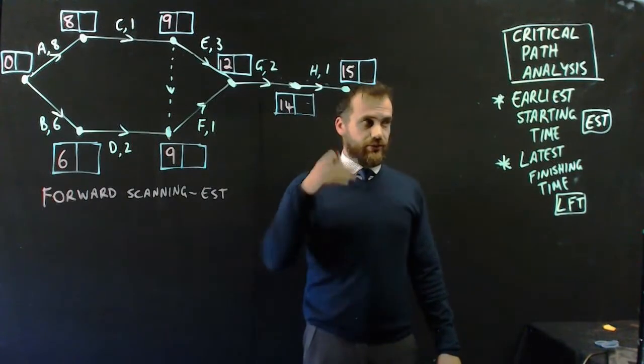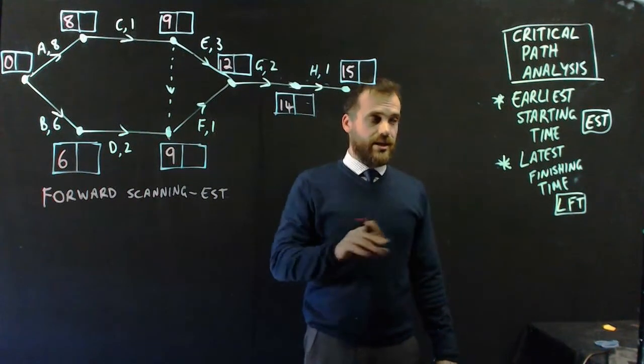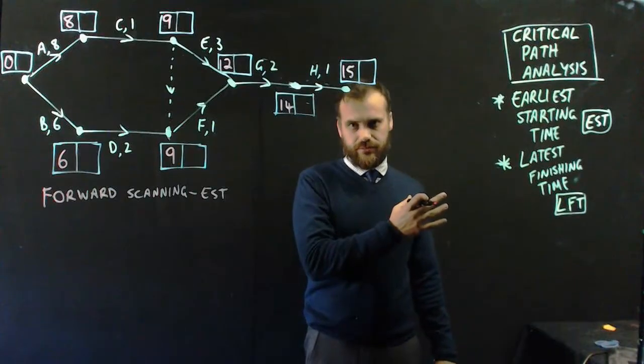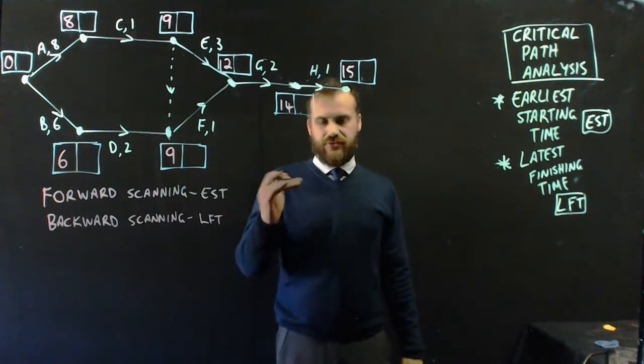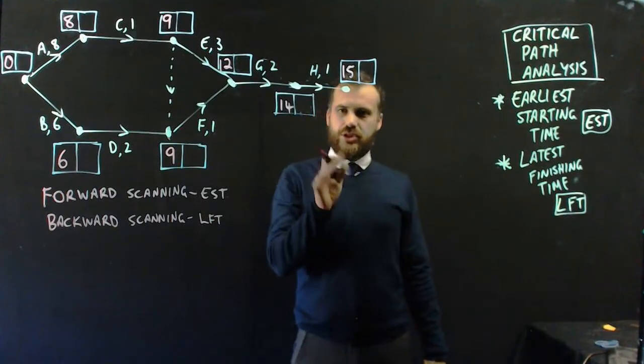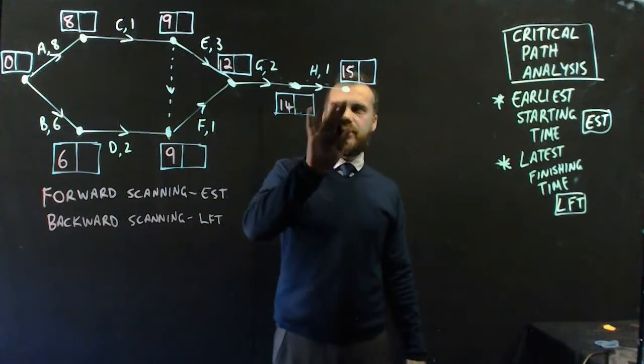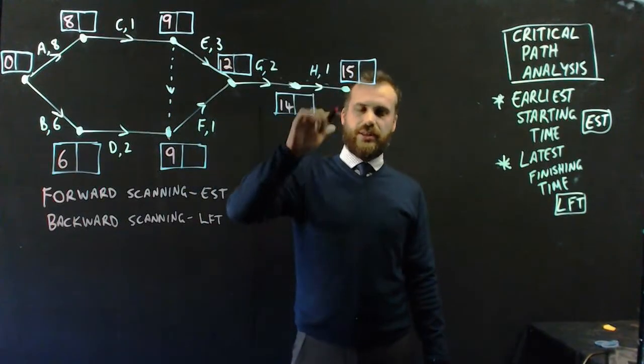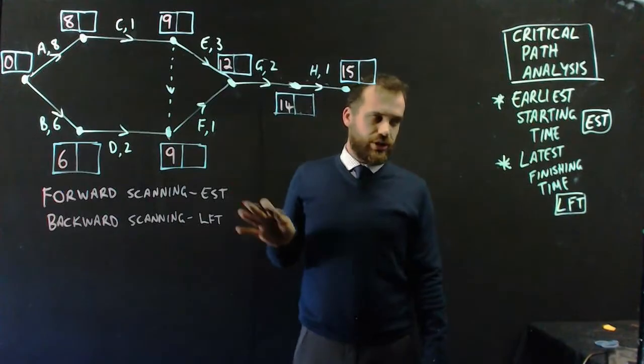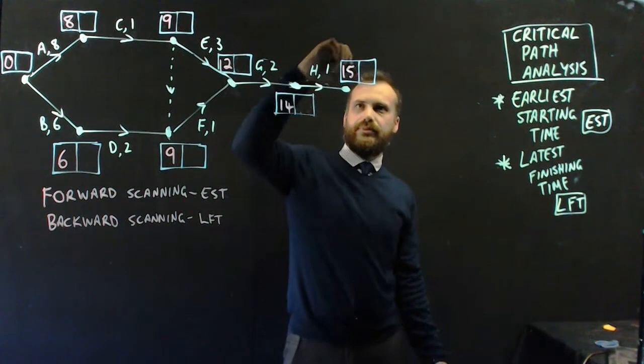That was forward scanning to find the earliest starting time. Obviously, I can now use backward scanning to find the latest finishing time. How do we think about latest finishing time? Well, first of all, this box here is just going to be like when the project finishes. And the project finishes after fifteen hours, right? That's the earliest that we can possibly finish it. It's also the latest we want to finish it because we don't want to go over time.